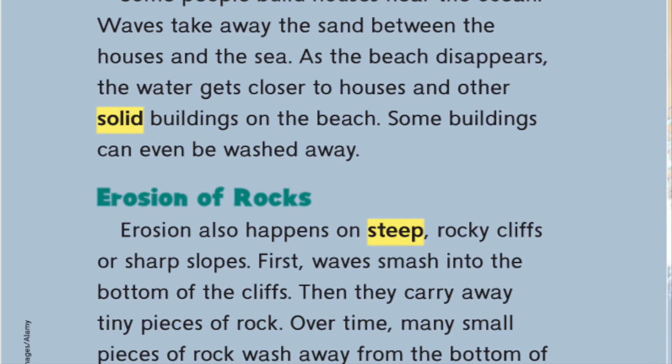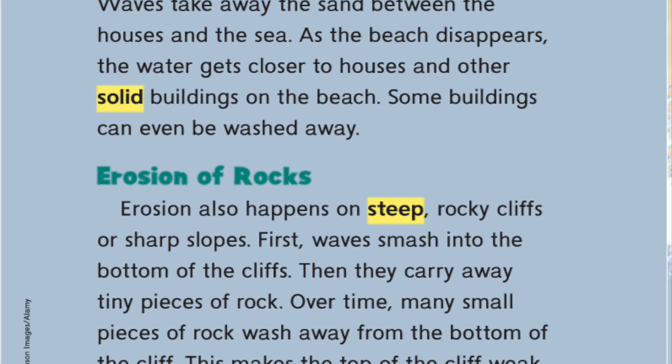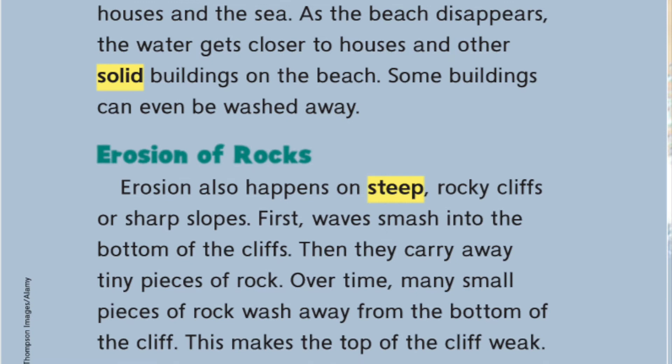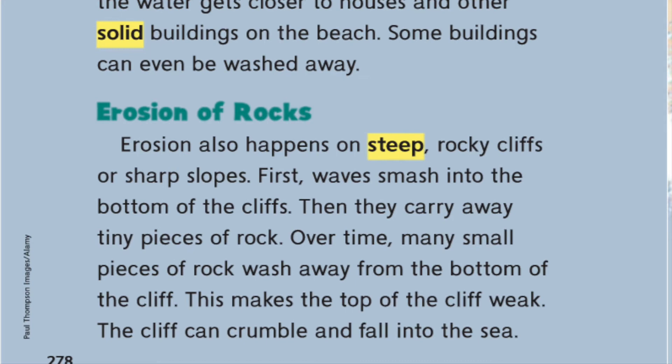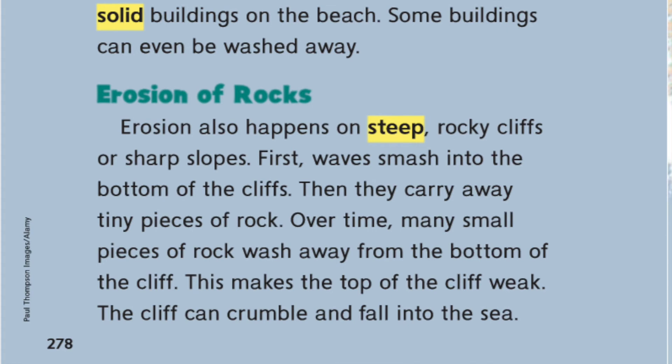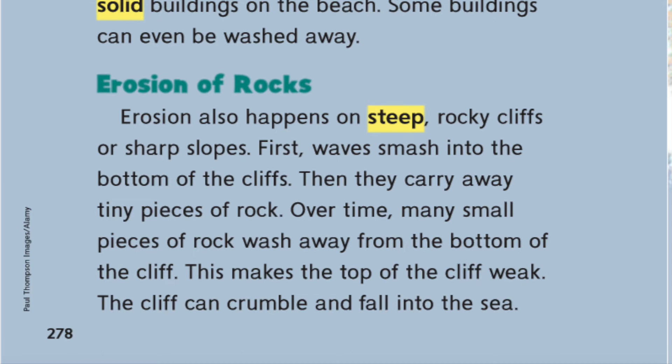Erosion of rocks. Erosion also happens on steep, rocky cliffs or sharp slopes. First, waves smash into the bottom of the cliffs. Then, they carry away tiny pieces of rock. Over time, many small pieces of rock wash away from the bottom of the cliff. This makes the top of the cliff weak. The cliff can crumble and fall into the sea.